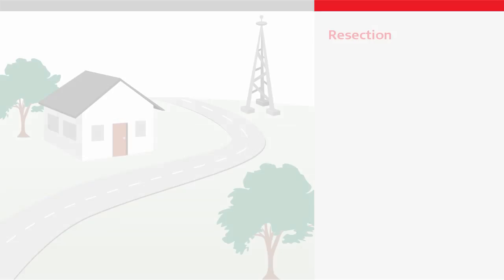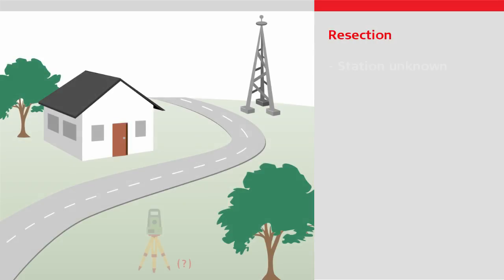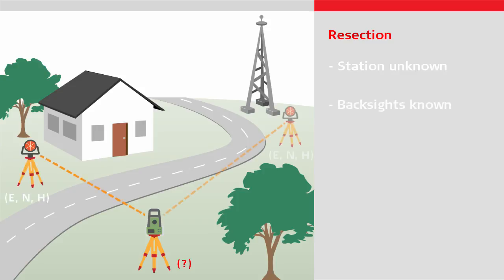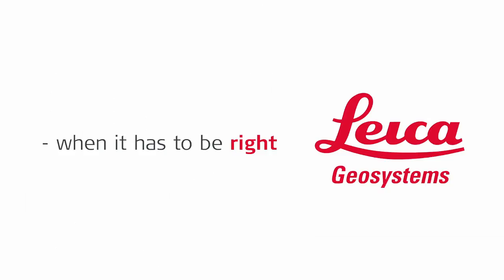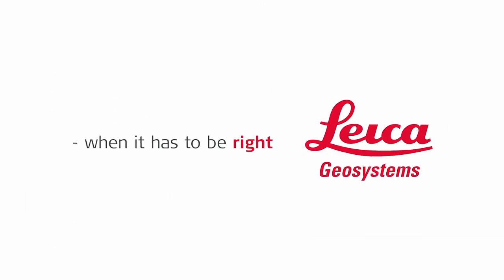In summary, the resection method is the method to use when you do not know the point over which you will position the total station, and you have two or more target points to which you do know the coordinates. Please do watch the other videos to learn more about the individual setup methods, and thanks for watching.